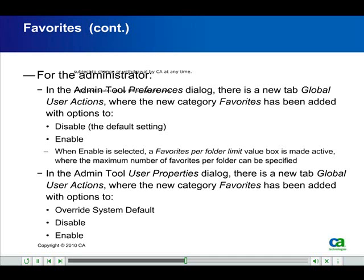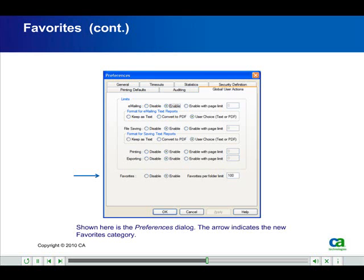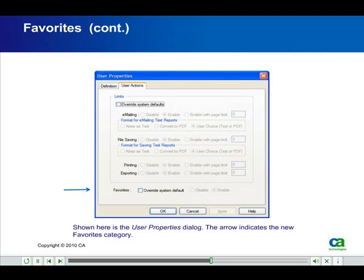For the administrator, in the Admin Tool Preferences dialog, there is a new tab Global User Actions, where the new category Favorites has been added with options to Disable — the default setting — and Enable. When Enable is selected, a Favorites Per Folder Limit Value box is made active, where the maximum number of favorites per folder can be specified. In the Admin Tool User Properties dialog, there is a new tab Global User Actions, where the new category Favorites has been added with options to Override System Default, Disable, and Enable. Shown here is the Preferences dialog; the arrow indicates the new Favorites category. Shown here is the User Properties dialog; the arrow indicates the new Favorites category.